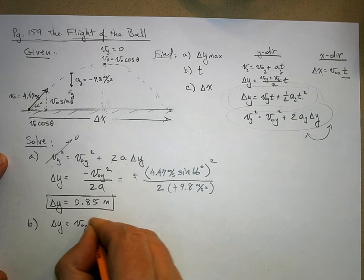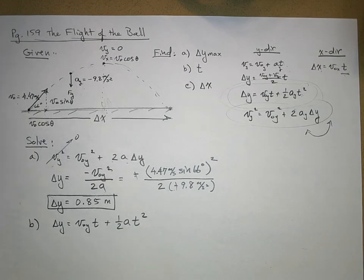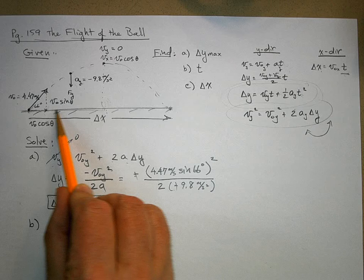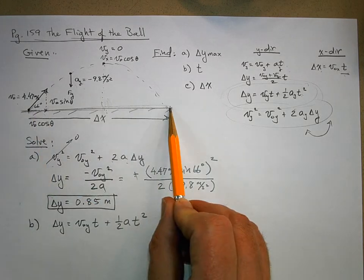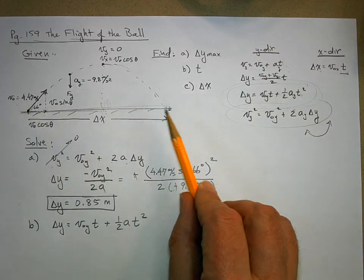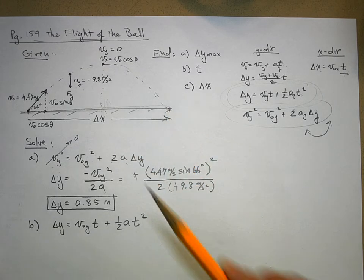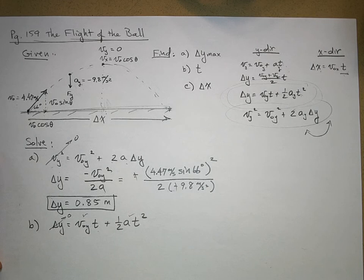Here's the key insight: even though delta_y isn't explicitly given, I know what it is. The ball starts and ends at the same height, so delta_y = 0. This is like a kickoff in football — the ball launches and lands at the same elevation. So the equation becomes: 0 = v_ny·t + ½·a_y·t².